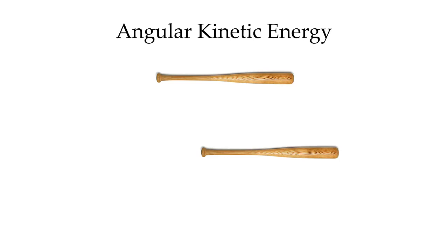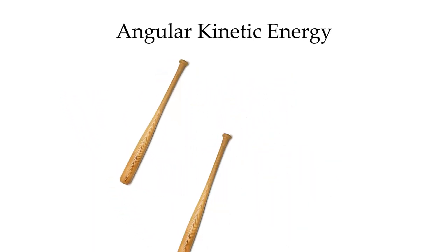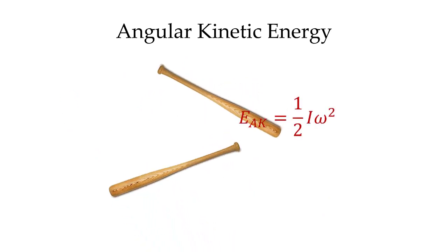Next, let's tackle angular kinetic energy, which is energy associated with rotation. Looking at two different bats that are rotating, the bat rotating more quickly is changing its orientation more rapidly, and therefore it has a greater amount of angular kinetic energy. The formula for angular kinetic energy is equal to one-half i omega squared. The similarity to angular momentum is notable — the difference is the one-half term in front and the fact that the omega term is squared. So unlike angular momentum where i and omega are equally weighted, because that angular velocity term is squared, it has a more profound effect on the magnitude of the angular kinetic energy.